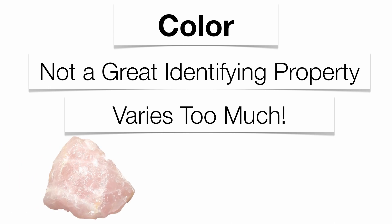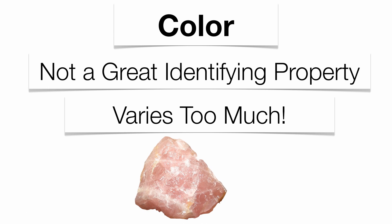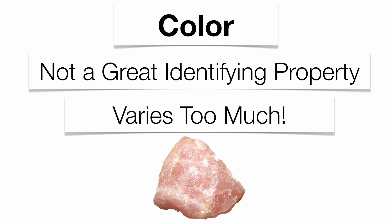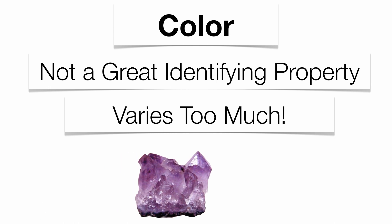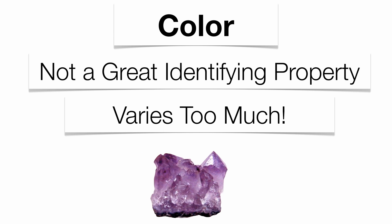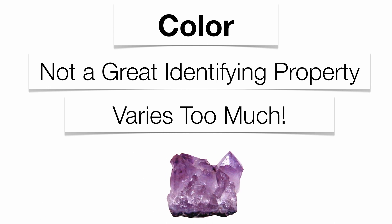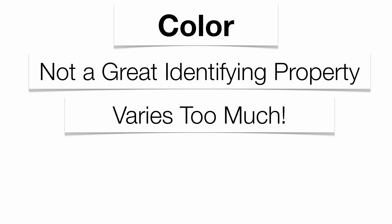Here is a sample of rose quartz — still quartz, different color. And this is a sample of purple quartz — still quartz. You have three different samples with three different colors. So color is not a good identifying property, even though it's the first thing you notice about a mineral.